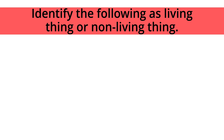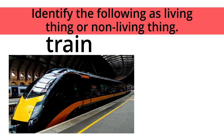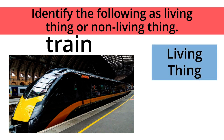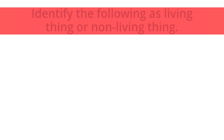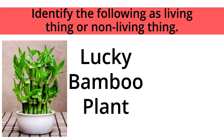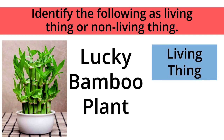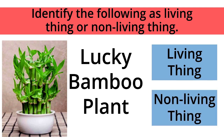Identify the following as a living thing or non-living thing. Train — the correct answer is non-living thing! Great! Lucky bamboo plant — the correct answer is living thing! Very good!